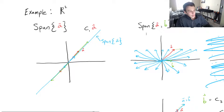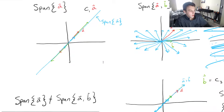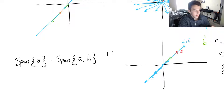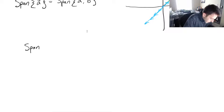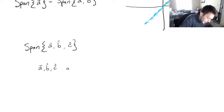An important term here: we can reach all of the plane because a and b are linearly independent of each other, which means that a and b cannot be written as a combination of the other one. So b is linearly independent of a. The span covers all of R2 only when this linear independence holds.